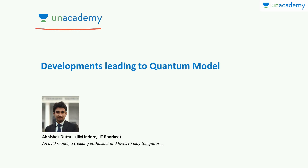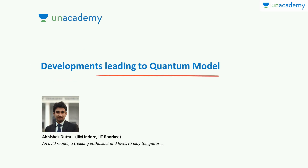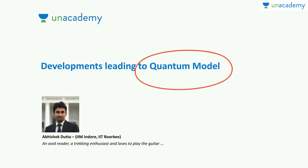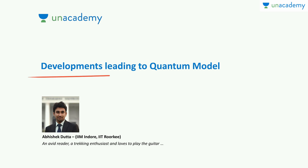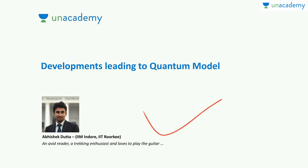Hello students, welcome to an academy once again. This learning session is about the developments which led to the quantum model. We had done up till the Bohr's model till now and we saw it had a few drawbacks. So there was definitely a need of a new model, and that new model was developed — it was named the quantum model. But before it could be developed, there are two major scientific developments which we need to study to understand the quantum model. I am Abhishek Datta. Let's begin.